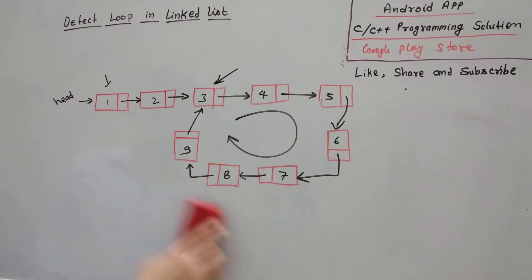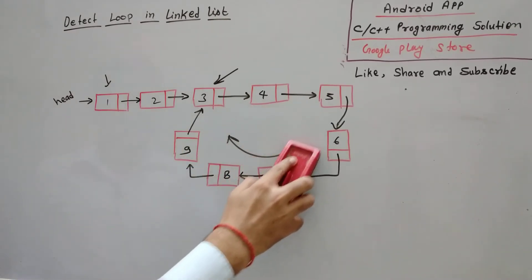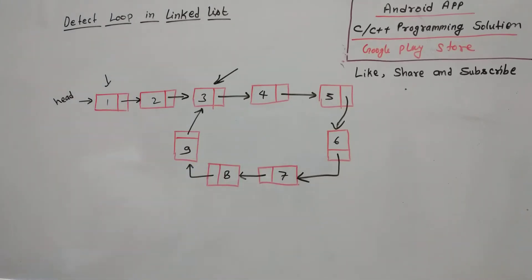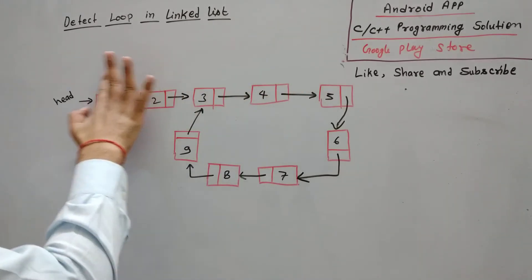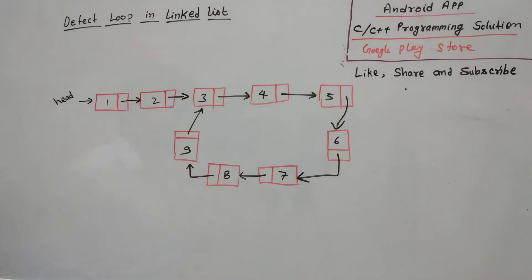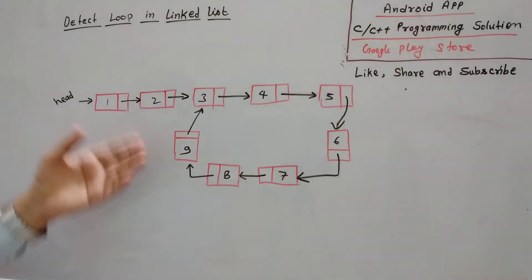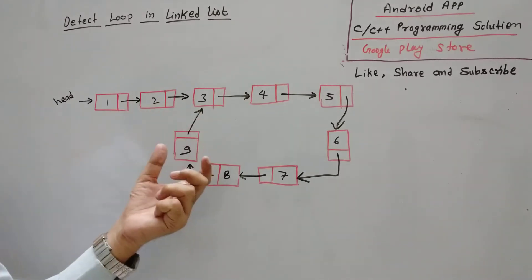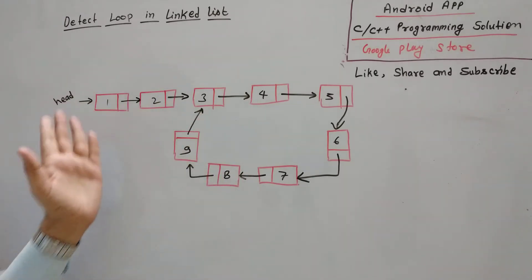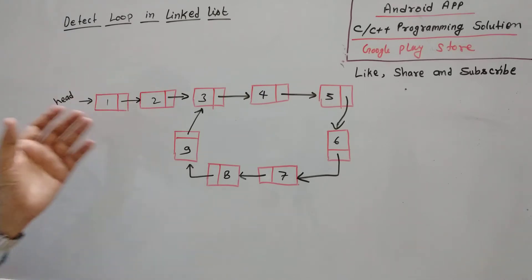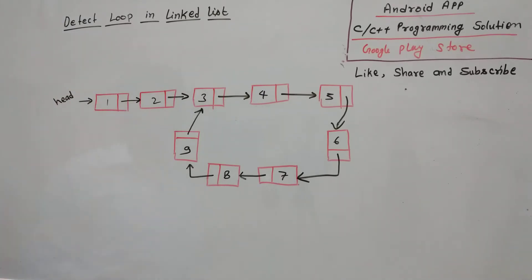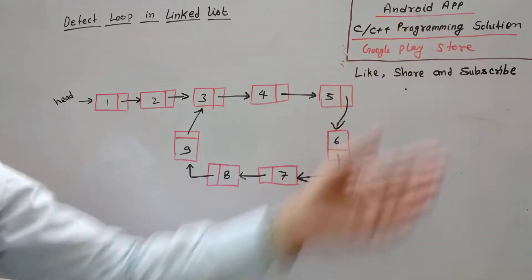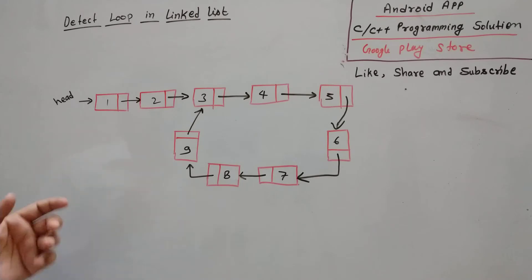So this naive method fails. This is a very classical problem and many companies frequently ask this question in their technical interview round. Basically this is a standard linked list problem and you will get the solution description as well as C and C++ programming solutions. You will get the full code and I am explaining the logic and the pseudocode.